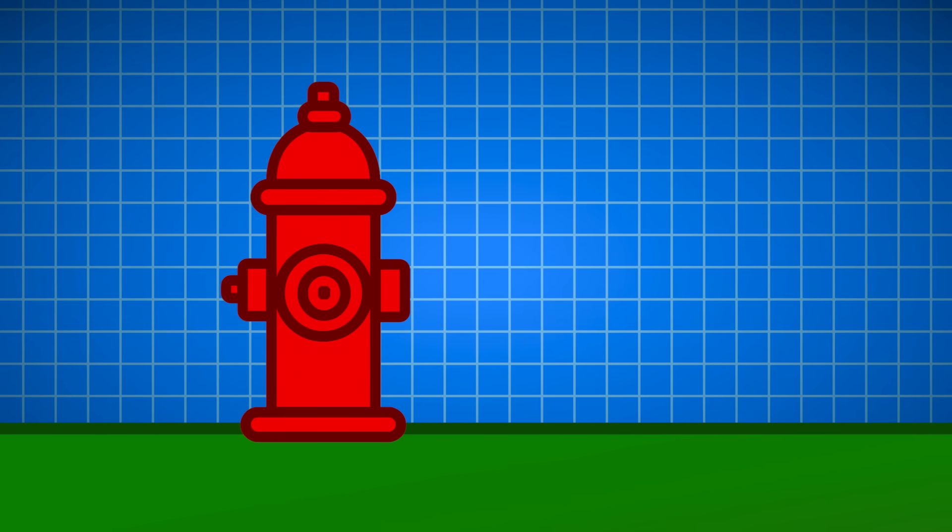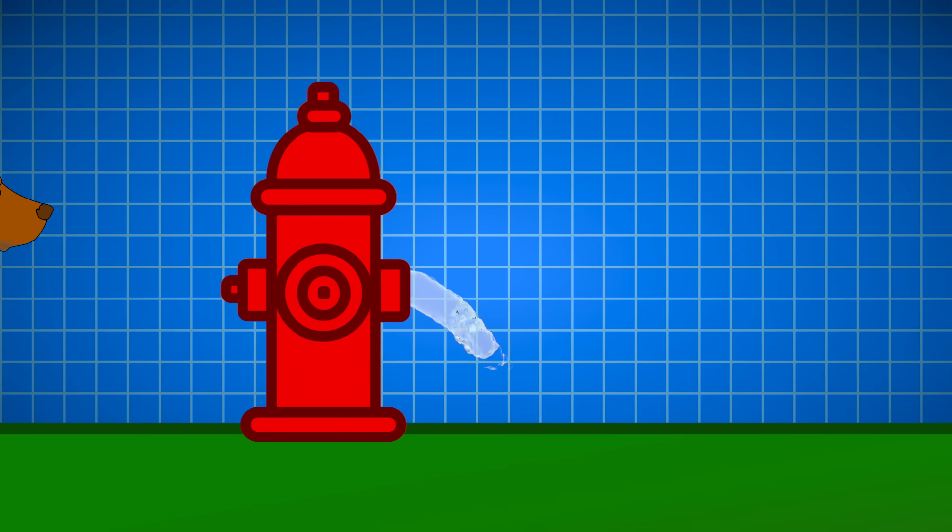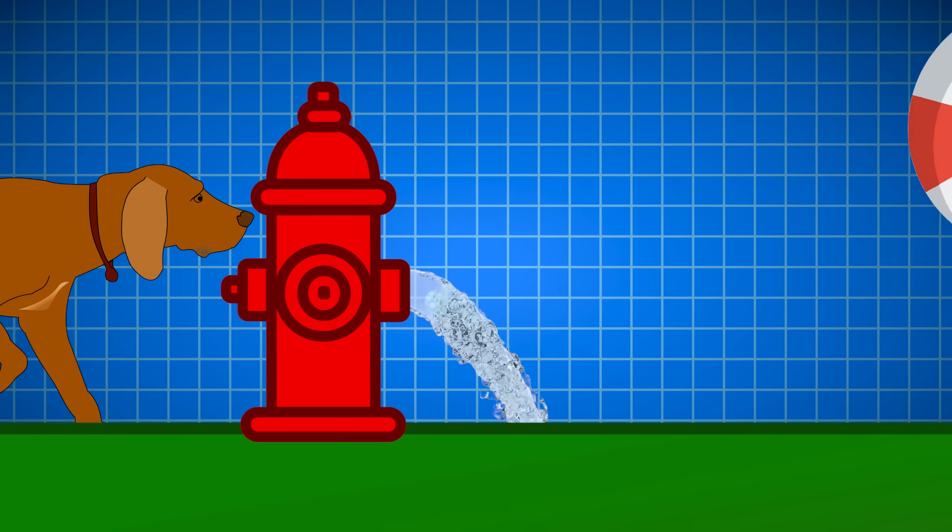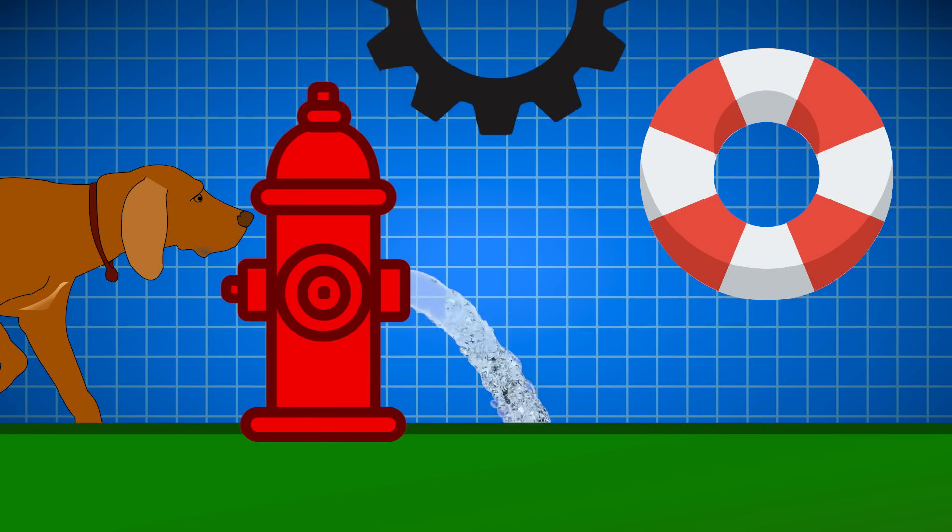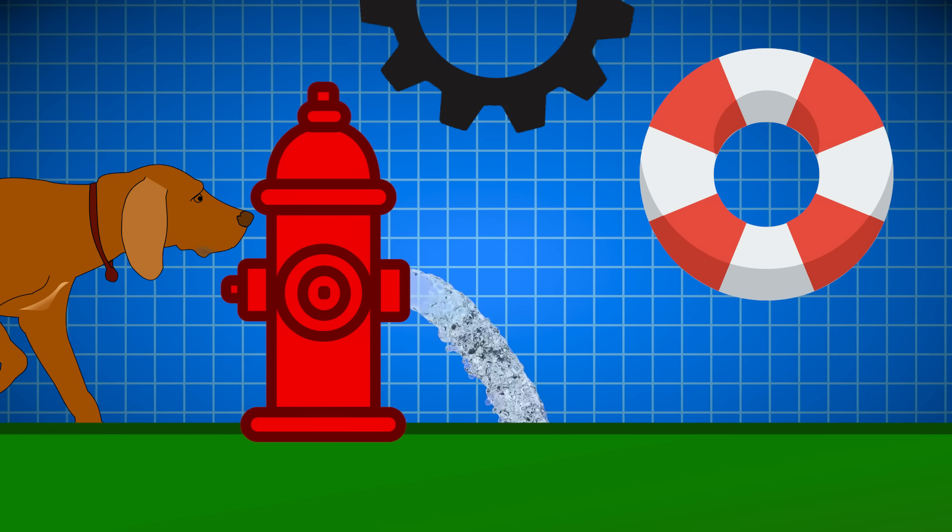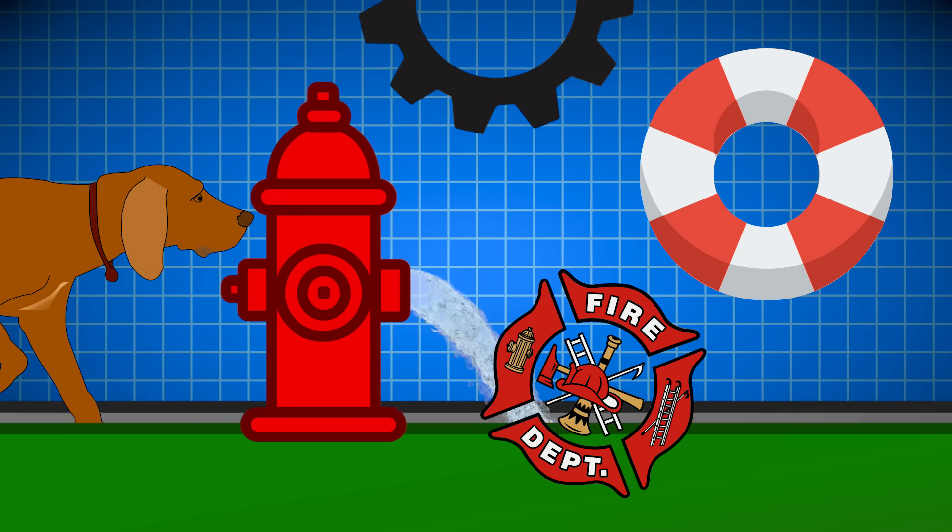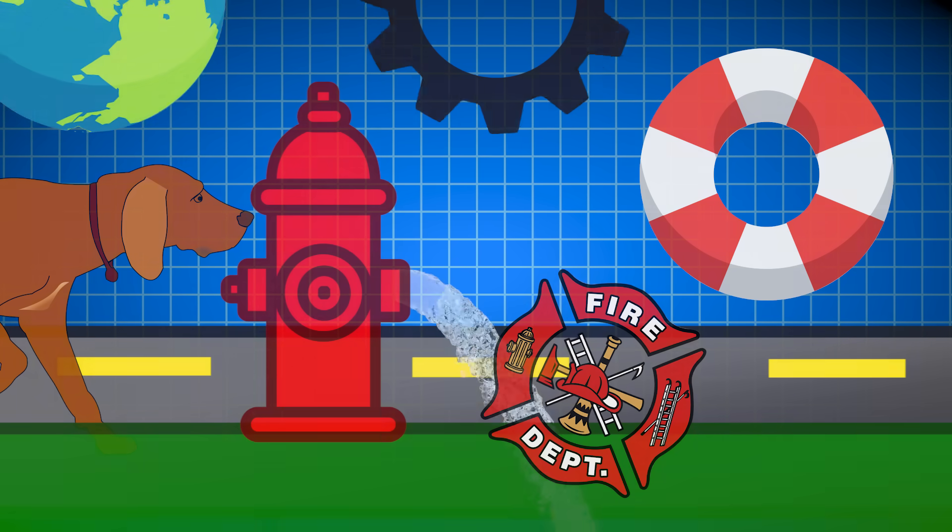So, these metal above ground pipe fittings that often meet the rear ends of man's best friend are actually life-saving pieces of engineering that have to remain at the ready to supply water to firefighters on the sides of roads across the country and the world.